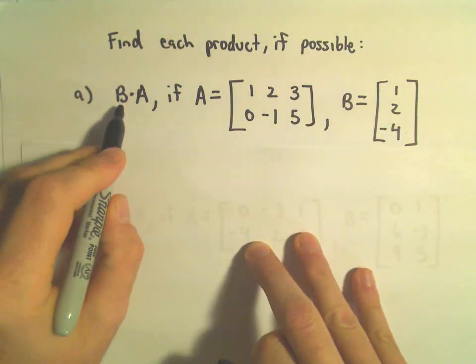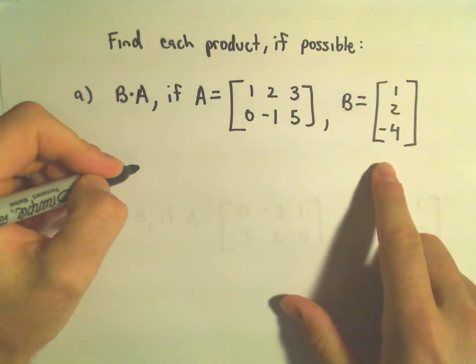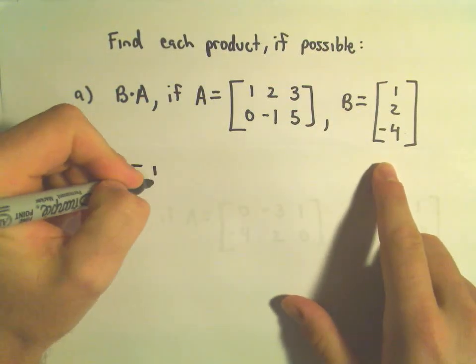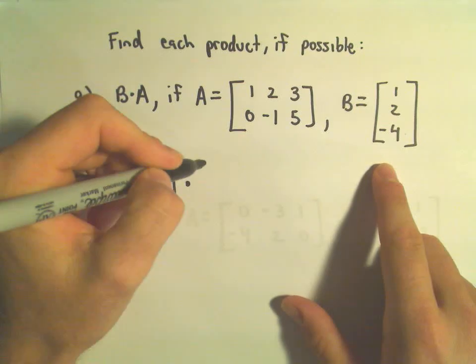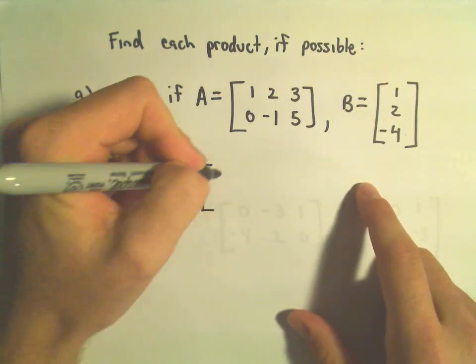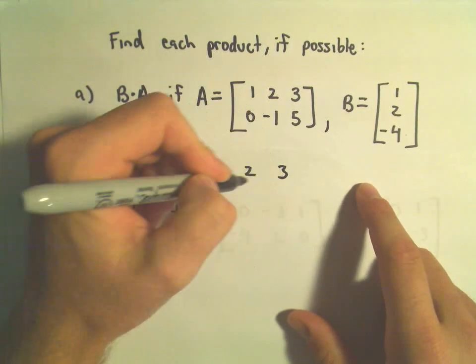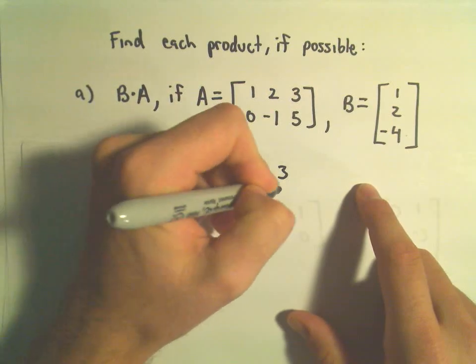So it says we have to put matrix B first, so I'm going to write that one down: 1, 2, negative 4, and then it says we're going to multiply that by matrix A. So 1, 2, 3, 0, negative 1, and 5.